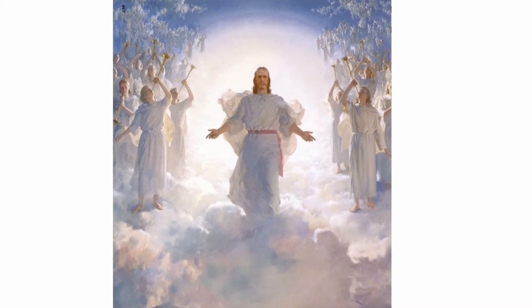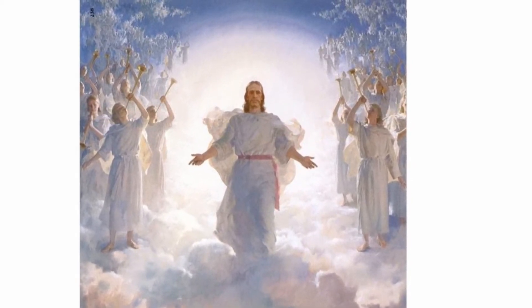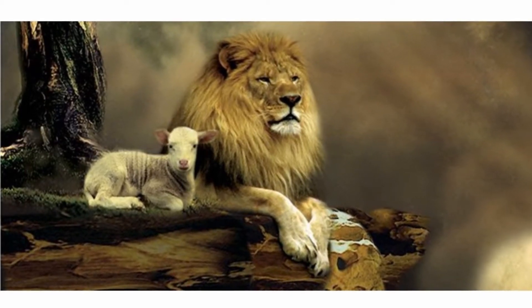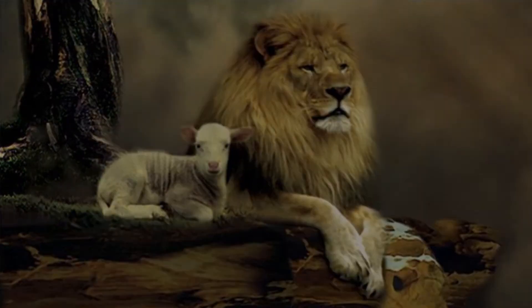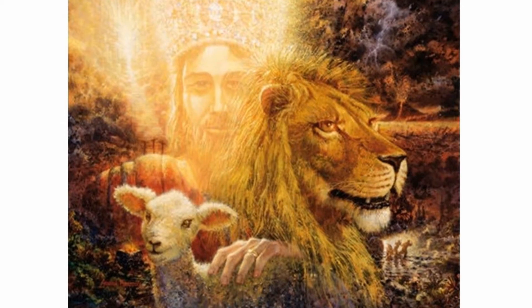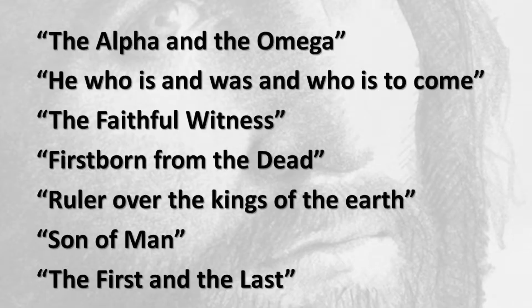Jesus is the hero and main character of the Revelation story. Satan's challenge was more than met by Jesus, symbolized by the lion of the tribe of Judah, the root of David, and the lamb as though it had been slain. We see in the profusion of names and titles for Jesus just how richly multifaceted he is. In just the first chapter of Revelation, Jesus is called the Alpha and the Omega, he who is and who was and who is to come, the faithful witness, the firstborn from the dead, the ruler over the kings of the earth, the son of man, the first and the last — seven titles in just one chapter.